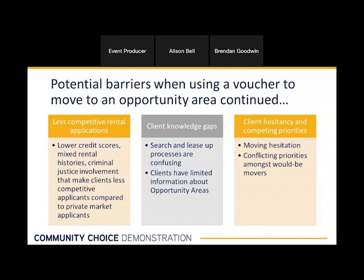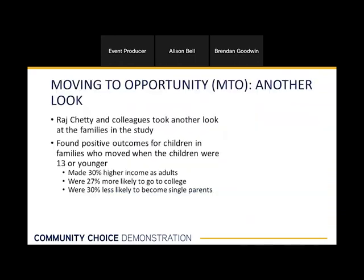There are also challenges that tenants face more directly — perhaps they have an uncompetitive rental application because of a lower credit score, maybe they don't have enough information about renting in an opportunity neighborhood, or while they want to move to a certain school district for their kids they have conflicting priorities to balance. Some families also have concerns about what life might be like in a new neighborhood. You might ask: what does it really matter what neighborhoods families have access to? How much do these barriers really come into play versus families simply choosing to live in higher-poverty neighborhoods?